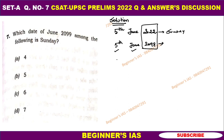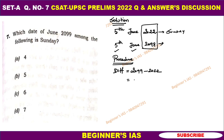So what is the procedure to do the yearly navigation? Listen, these steps are very important and you can apply this to any question. The first step is to find the difference between the years. So 2099 minus 2022 is nothing but 77.